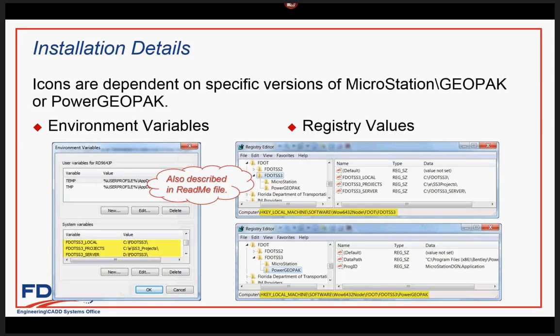It's still very important to have the right versions. If you do an install and you don't get an FDOT SS2 icon on the desktop folder, that indicates an unexpected version of GeoPath is installed. The install also stores the paths you define when prompted for your FDOT local directory, FDOT server directory, and projects directory, along with MicroStation and Power GeoPath data, in the registry because it's used by other applications in the FDOT software.